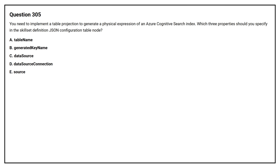Question number 305. You need to implement a table projection to generate a physical expression of an Azure Cognitive Search index. Which three properties should you specify in the skillset definition JSON configuration table node? Option A: Table name. Option B: Generated key name. Option C: Data source. Option D: Data source connection.